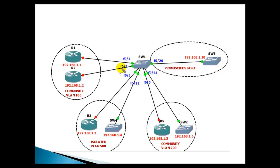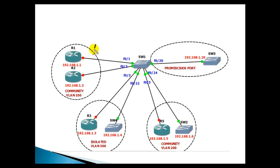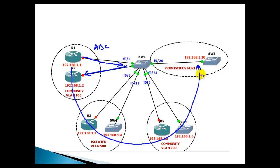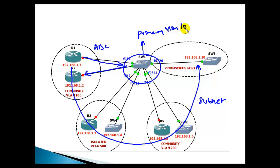For the lab scenario, I have Switch 1, a 3560 switch, acting as the centralized device connecting to all customer sites. Router 1 and Router 2 belong to customer site ABC. Traffic from Router 1 should also be accessible by Router 2 — they are on the same physical subnet and the same primary VLAN. I'll use VLAN 10 as the primary VLAN.